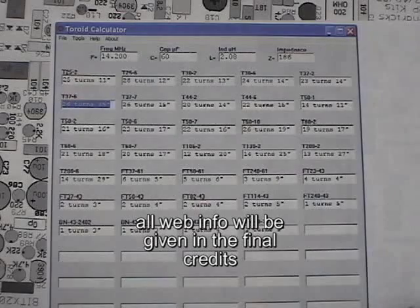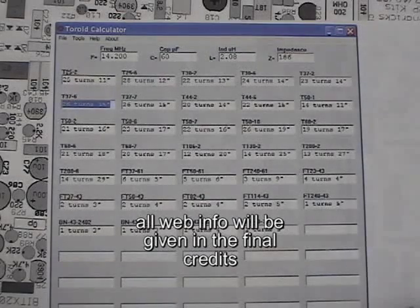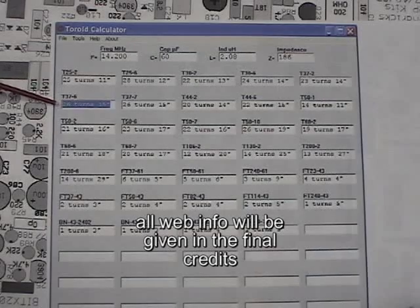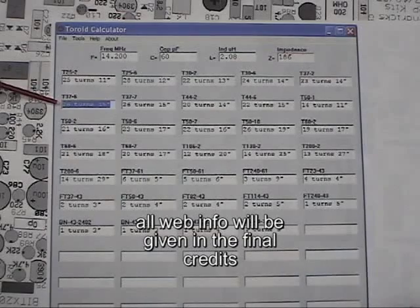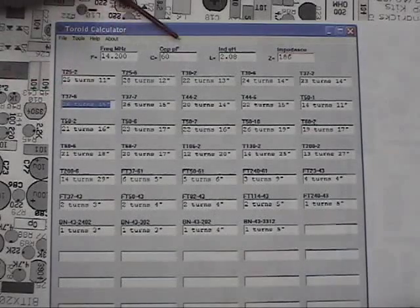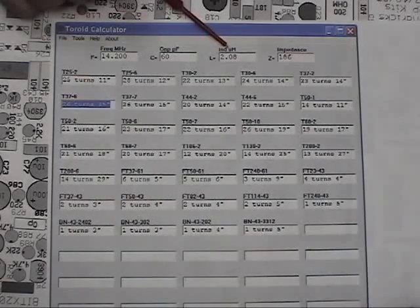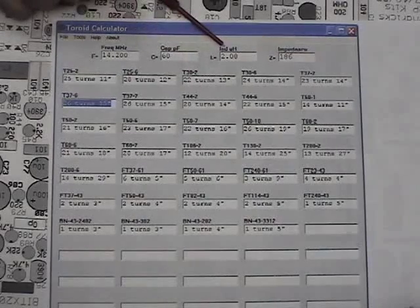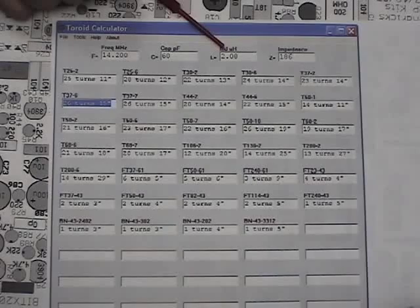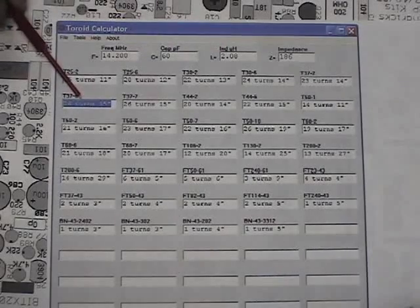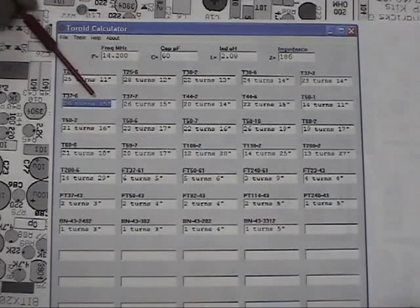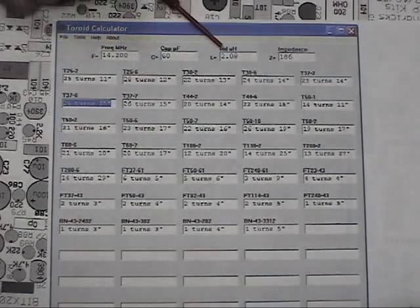We have a couple of tools that are available that make this pretty easy to do. You can go to kitsandparts.com and they have a toroid calculator. I've decided I wanted to use a T37-6 core because I have some, they're easily obtainable, and they're just about the right core to do this particular job. If we look up here, you put in your inductance you want and then just click anywhere else. It modified it to 2.08 because that's what we're going to end up with for the number of turns. If we look down here, it says it will give us 26 turns. 26 turns on a T37-6 coil will give us 2.08 microhenrys.